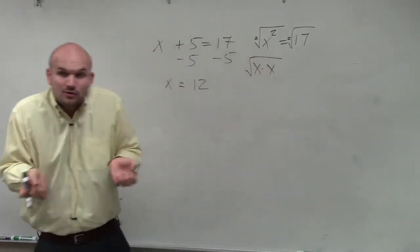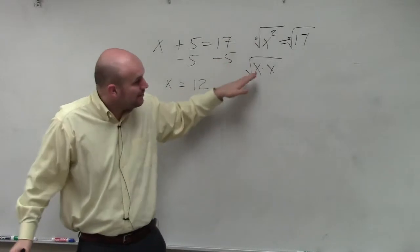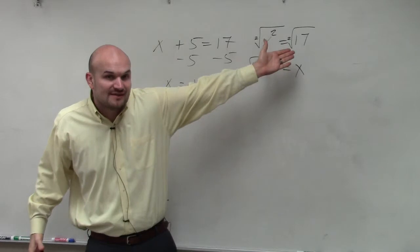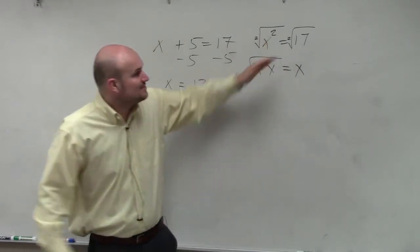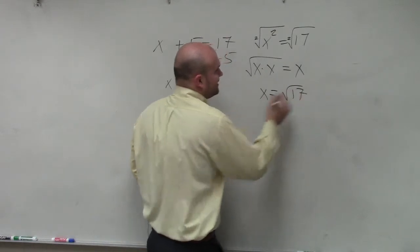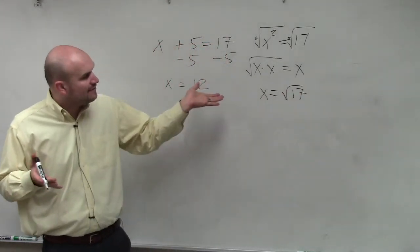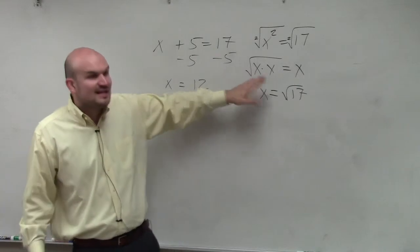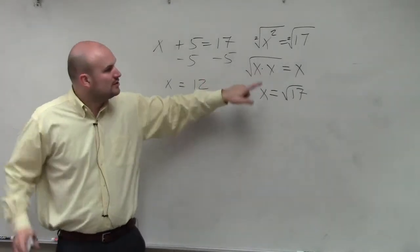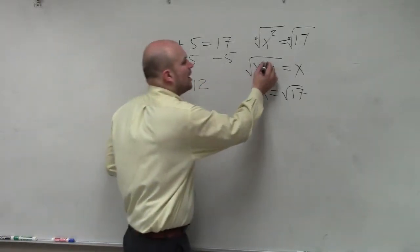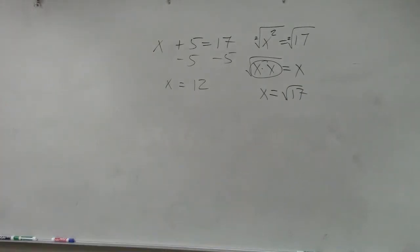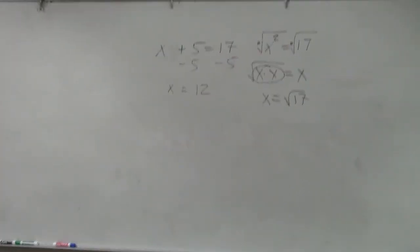So the square root of x squared, which is x times x, is just going to equal x, right? Now I can't take the square root of 17, so I'm just going to leave that as x equals the square root of 17. But what I want you guys to understand is when we're taking the square root, the square root says what number multiplied by itself. So we want to look at taking the square root of pairs of numbers. That's why the prime factorization is helpful for us.